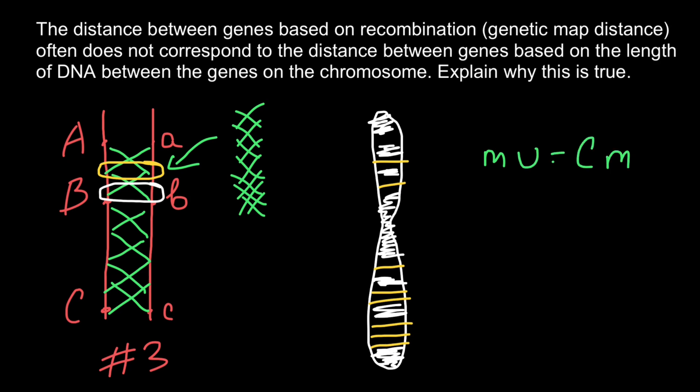Map units equal centimorgans. One map unit equals one centimorgan, and one percent of the recombination frequency equals both one map unit and one centimorgan.